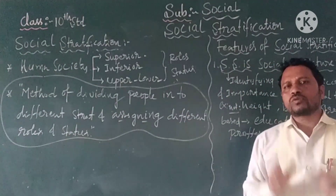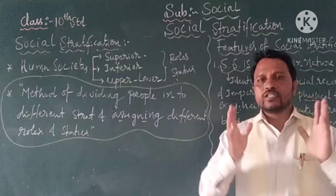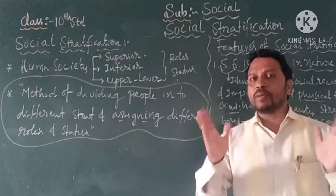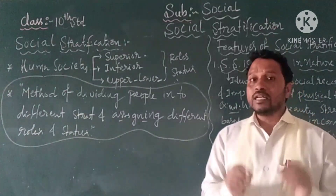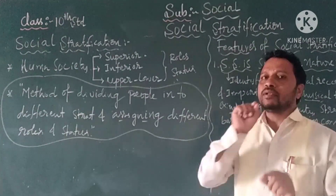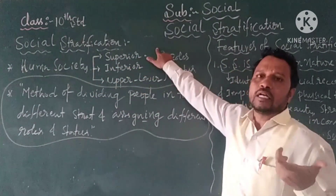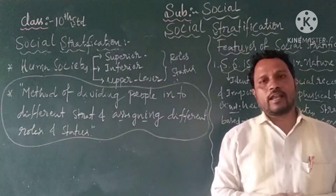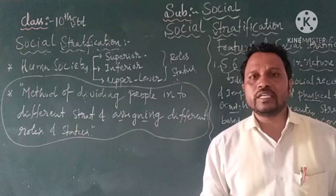Students, society consists of many people — we say it is human society. Human society is classified into different people. There is a difference between different people. Human society consists of a superior class, inferior class, upper and lower class. So this is the classification and differentiation we see in human society.